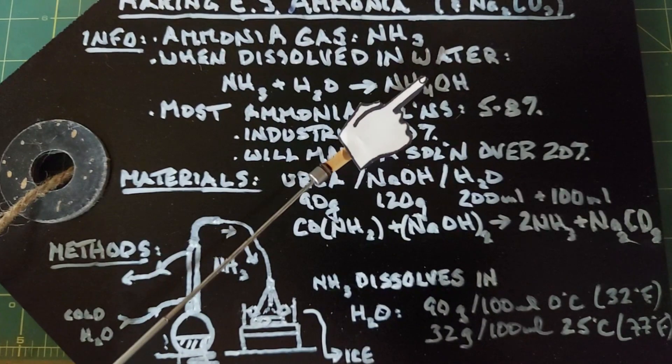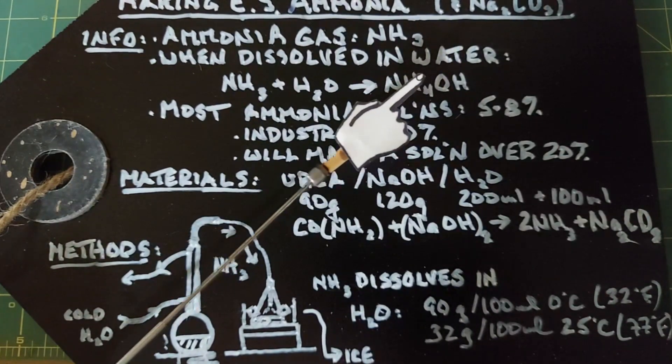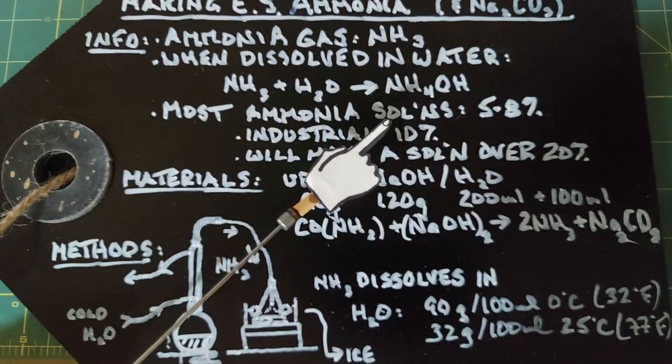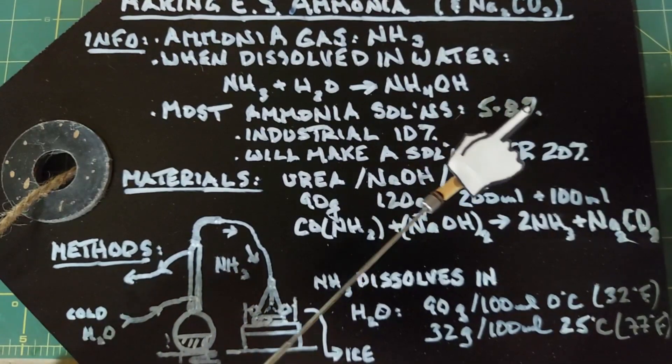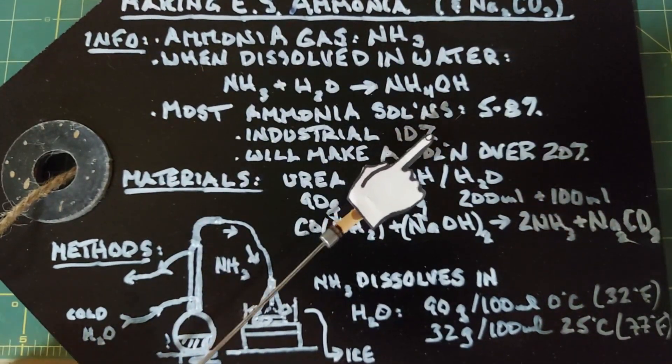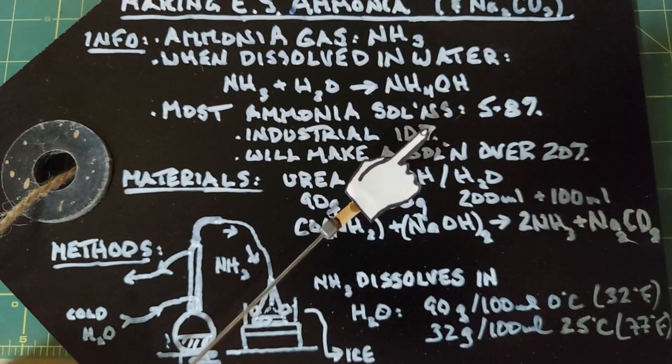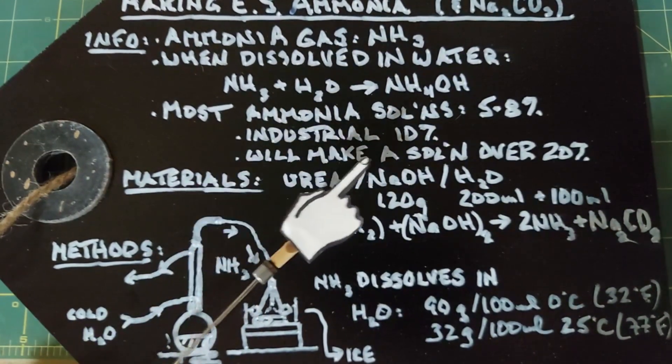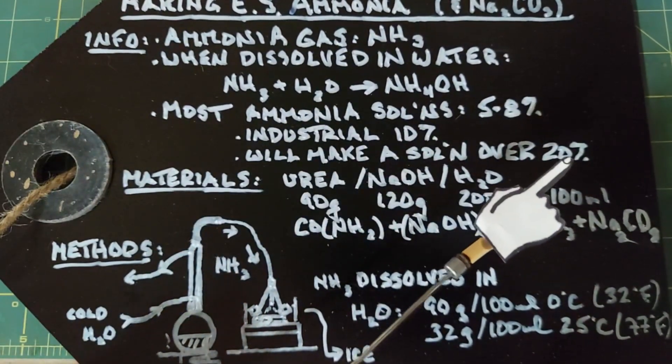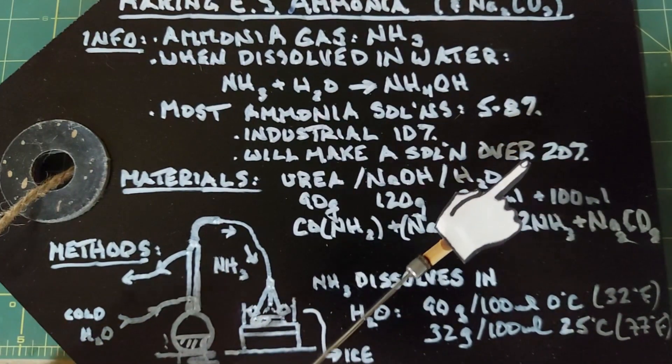When you buy ammonia from the store, this is what's inside the bottle. Most ammonia you buy in the store is 5 to 8 percent. You can get industrial strength 10 percent, which I have for some experiments. However, today we're going to make some solution that's over 20 percent strength. Be careful around your nose with that one.